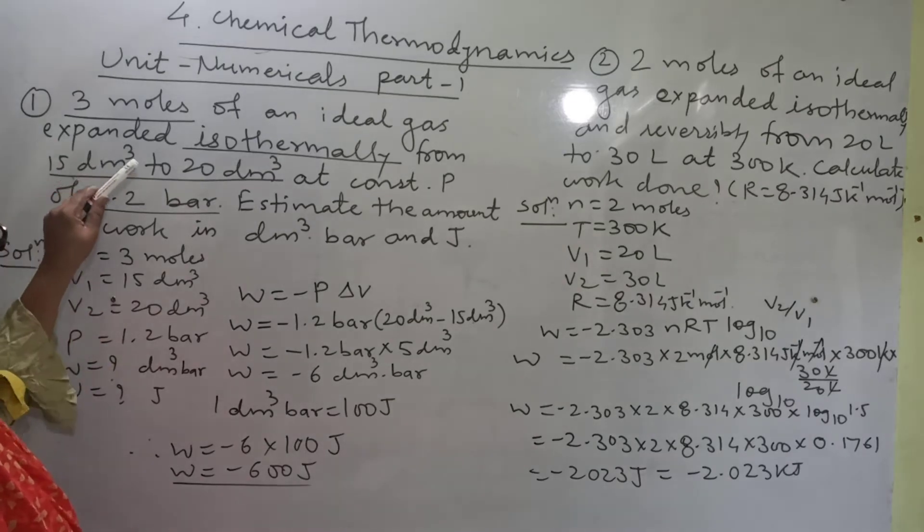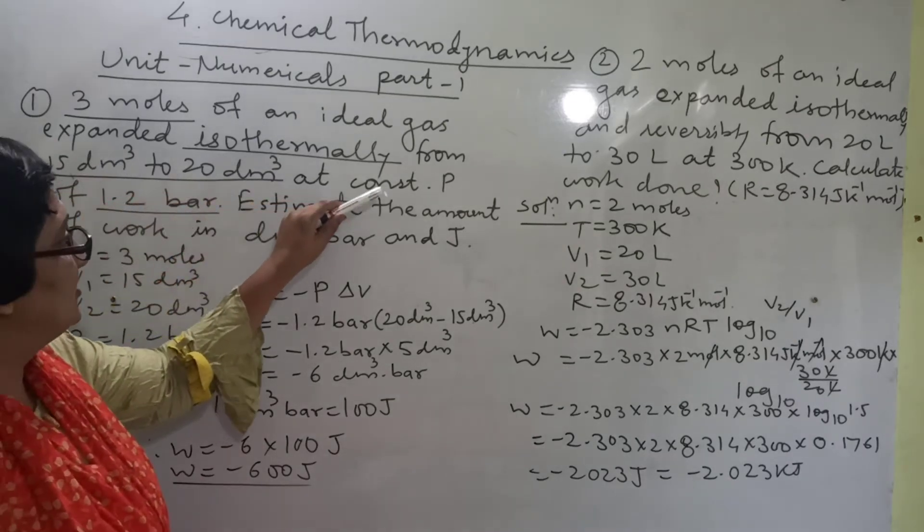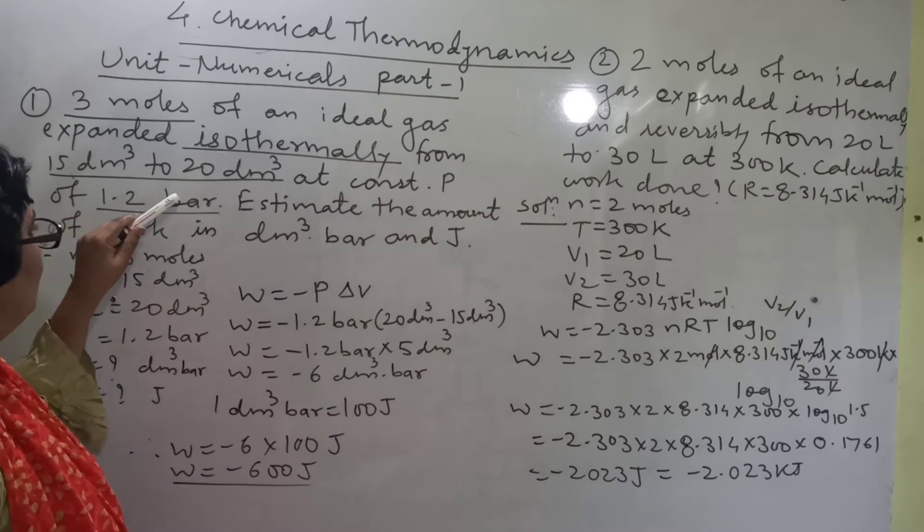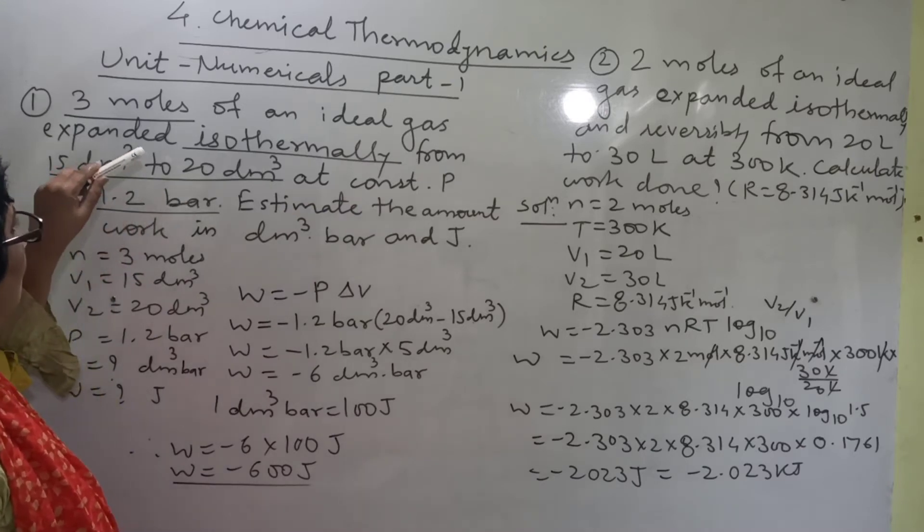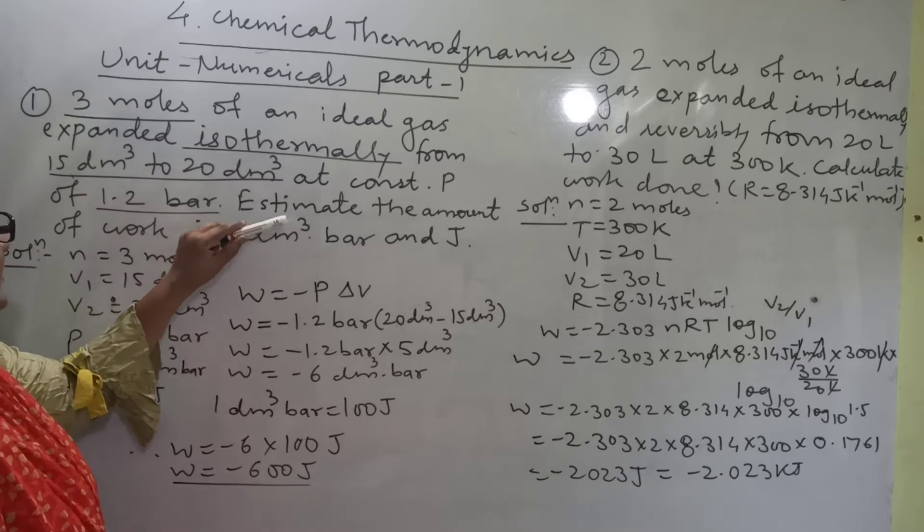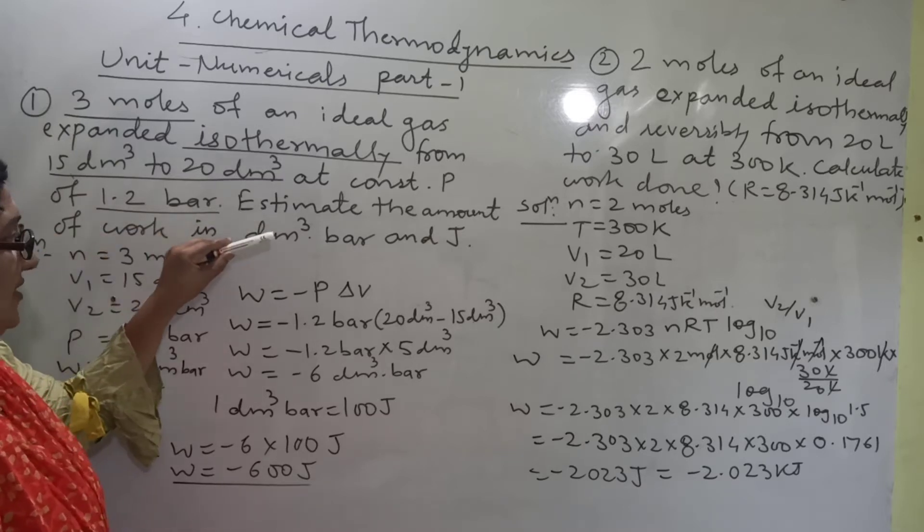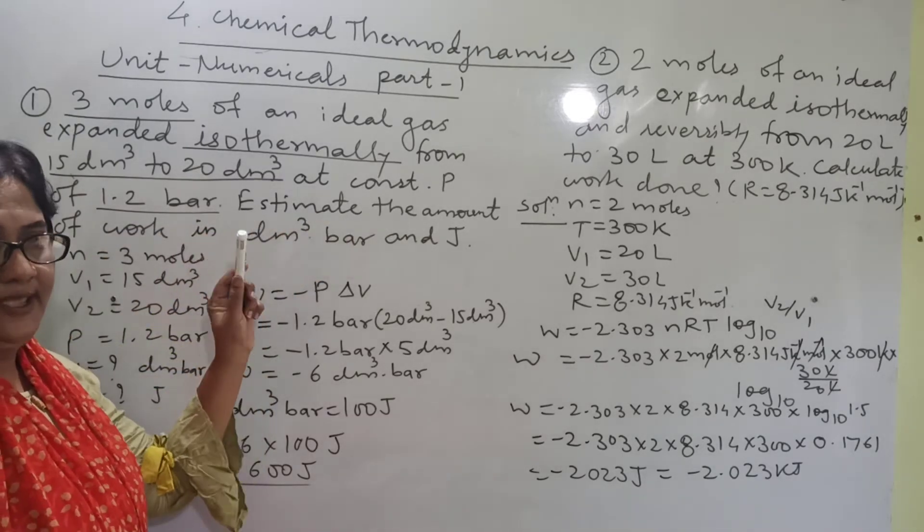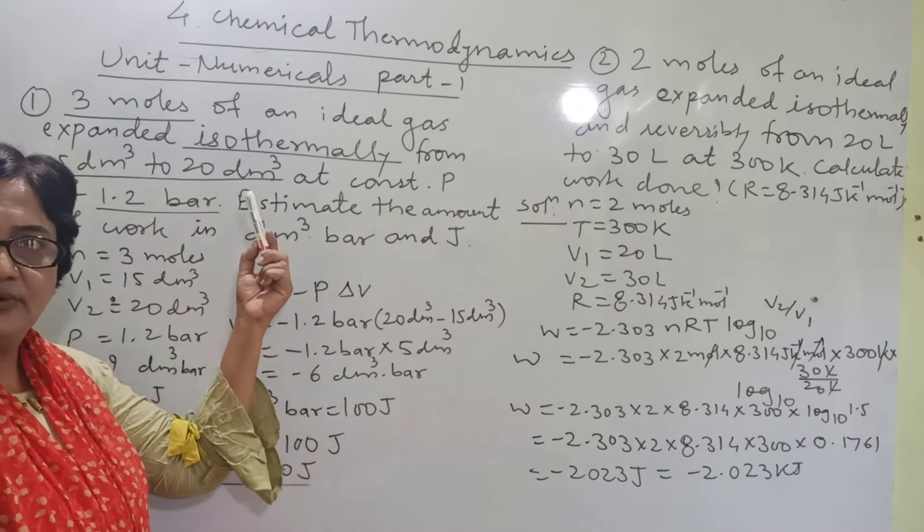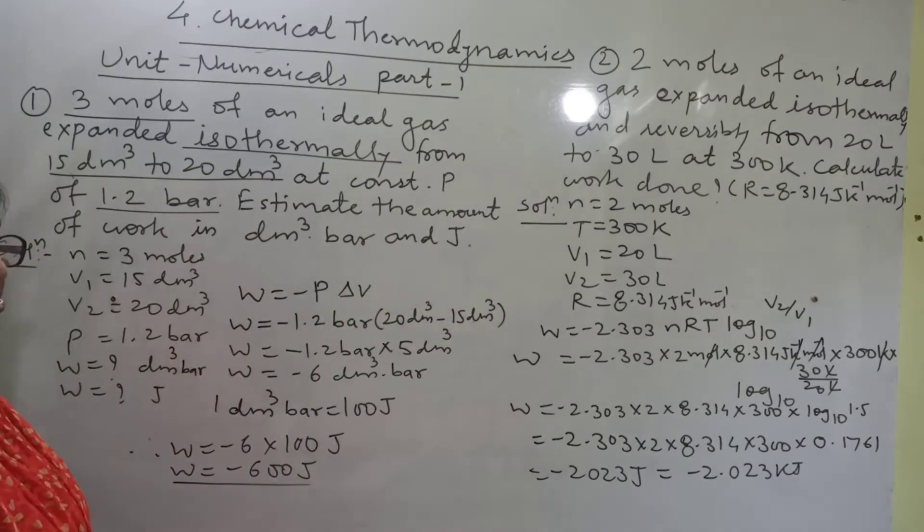From 15 cubic decimeter to 20 cubic decimeter at constant pressure of 1.2 bar means pressure is given, 2 volumes are given, number of moles are given. Estimate the amount of work in cubic decimeter bar and in Joule. In 2 units you have to calculate the work.